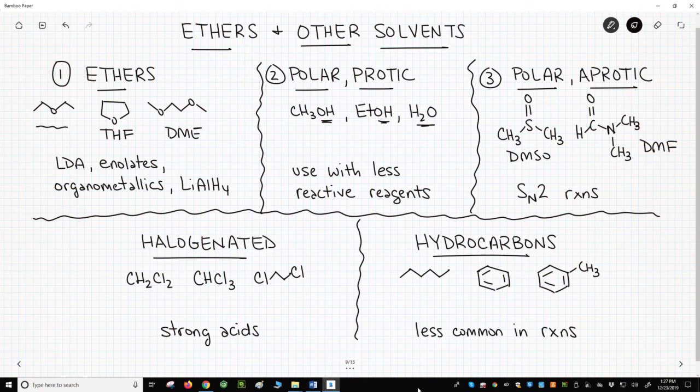The fourth category includes the halogenated solvents, like methylene chloride, also called dichloromethane or DCM, chloroform, and dichloroethane. These solvents resist acids and are often used for reactions that require very strong acids.